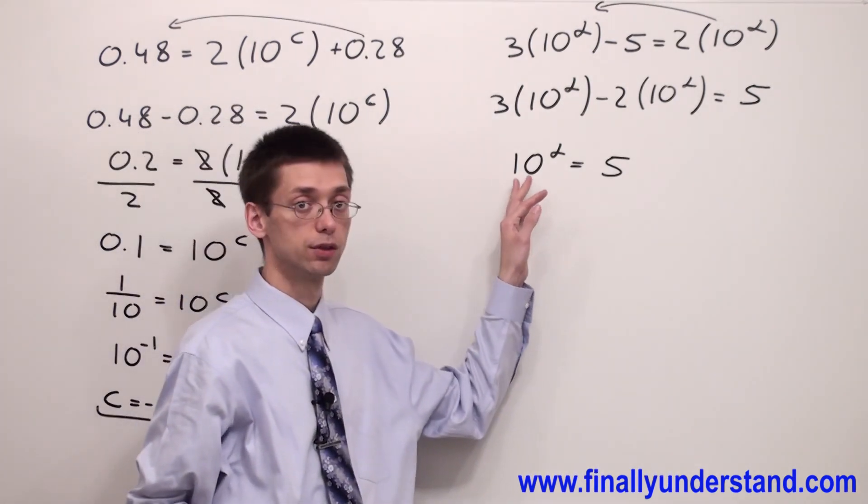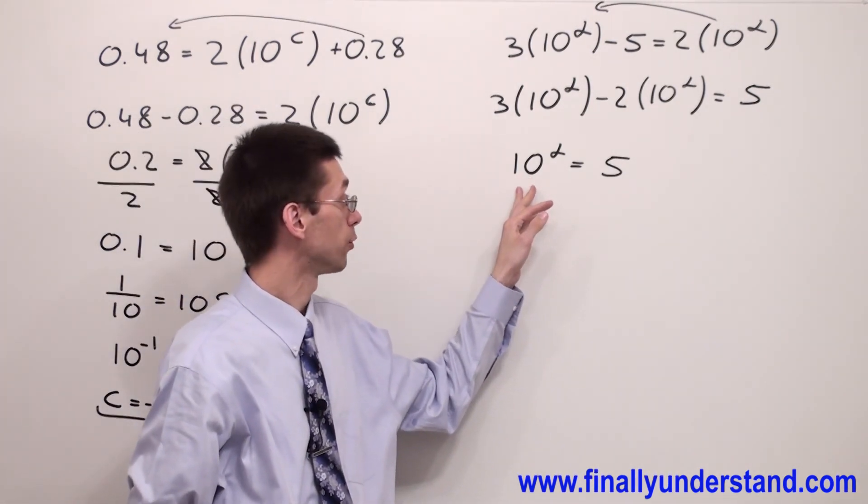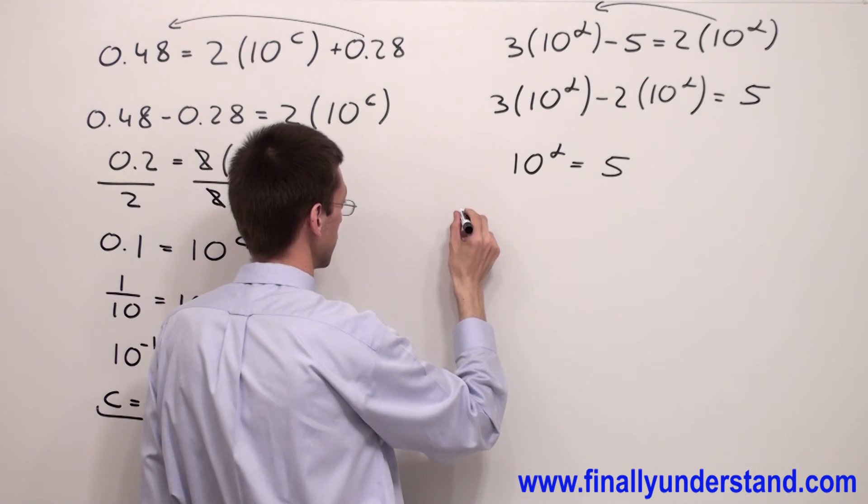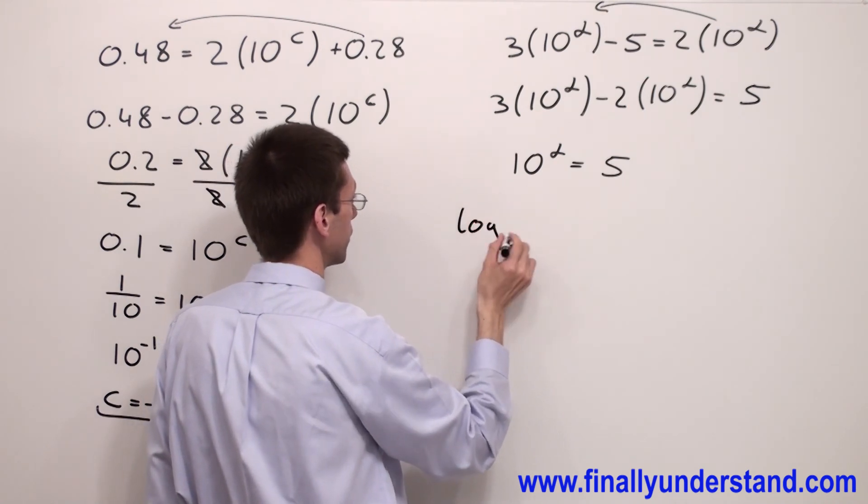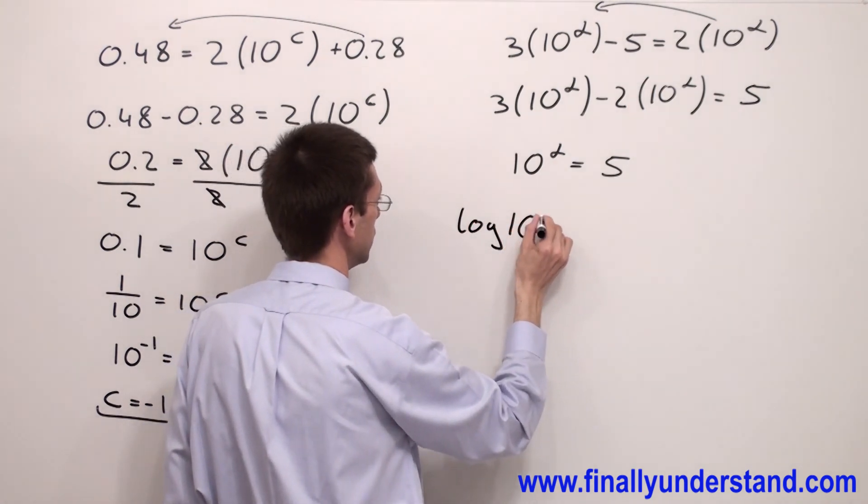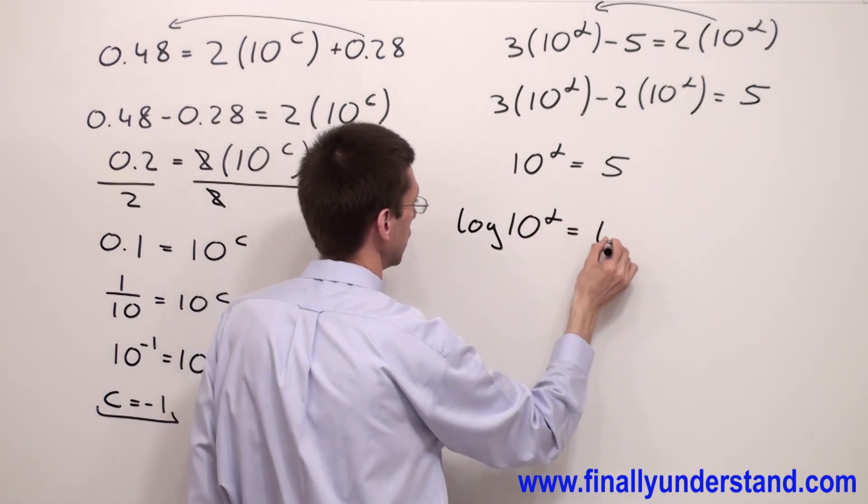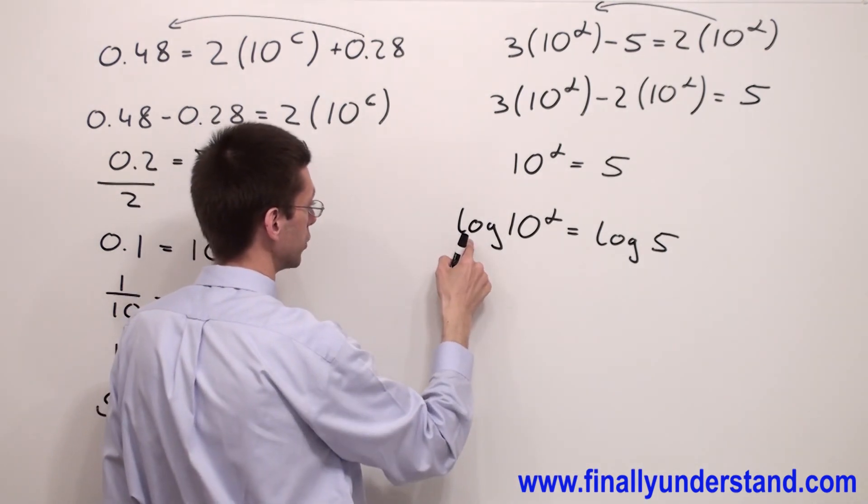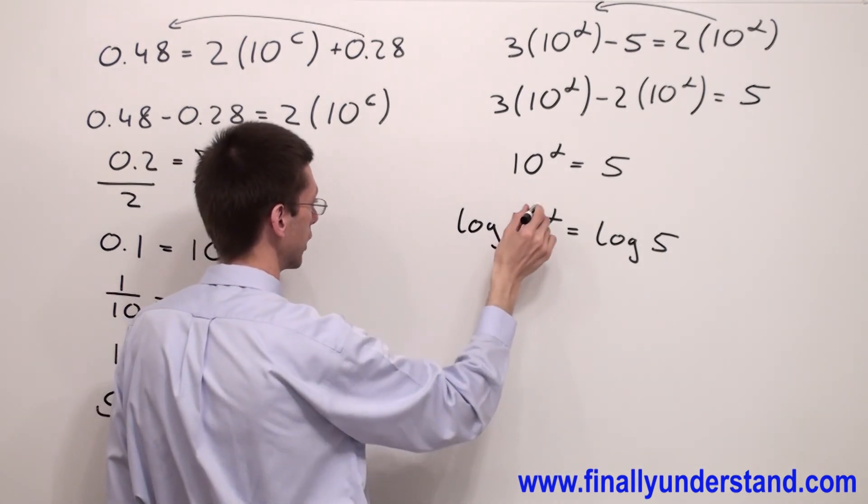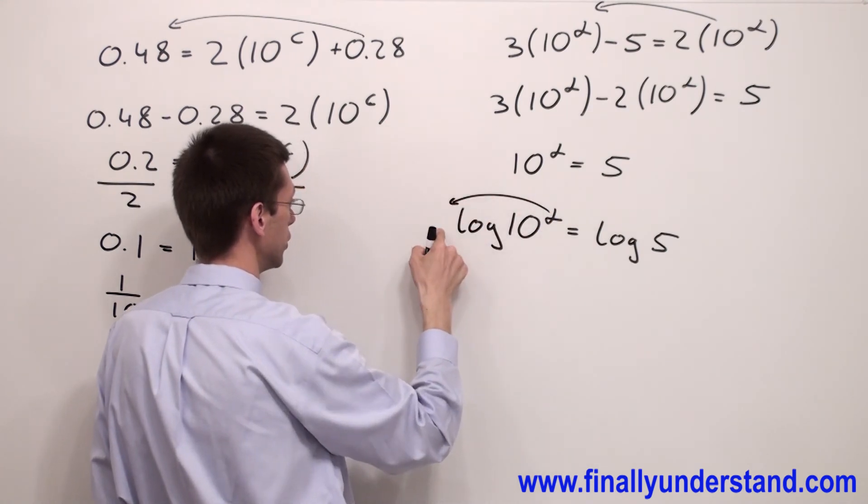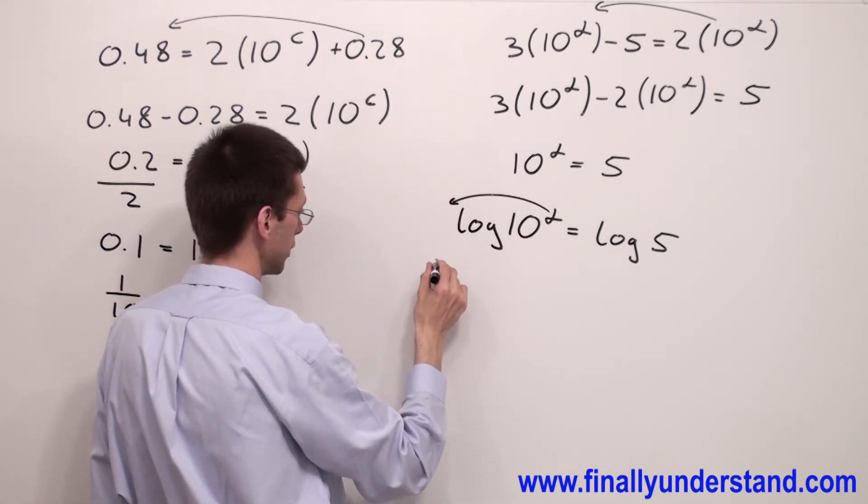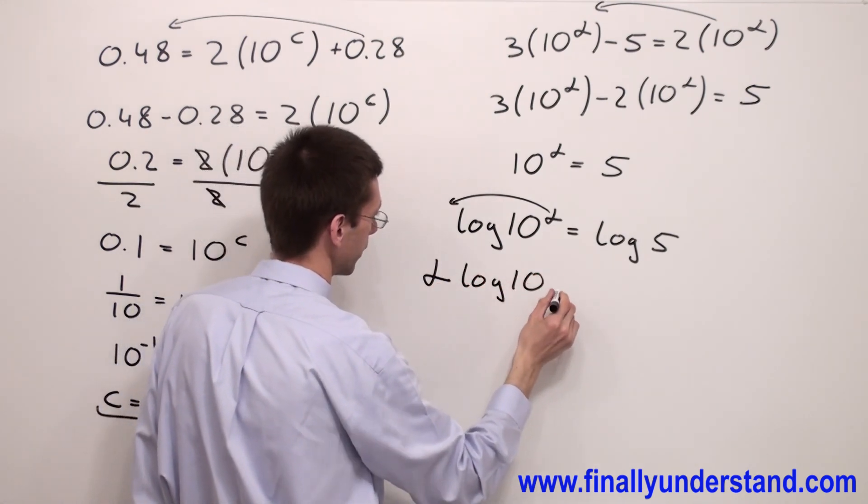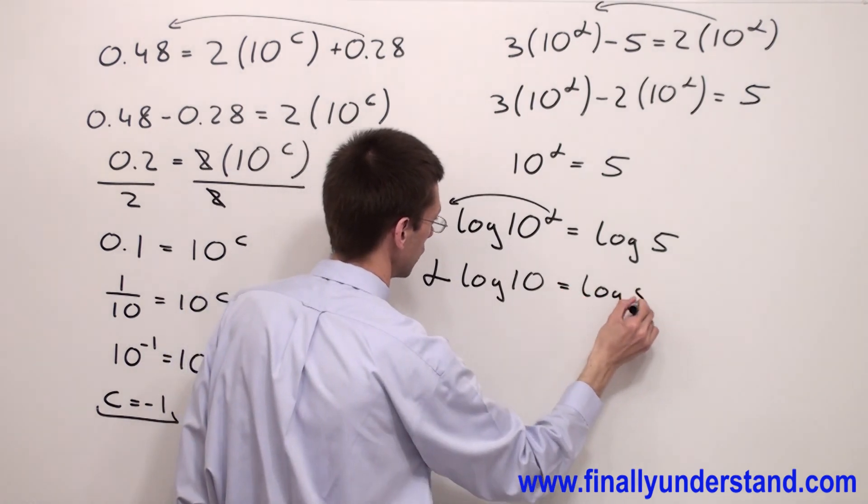The base is 10 so I'm going to use the common logarithm, and I'm going to rewrite this as log of 10 to alpha equals log of 5. Next I'm supposed to use the property for the power of the logarithm and move this alpha to the front of the logarithm and simply write alpha log 10 equals log of 5.